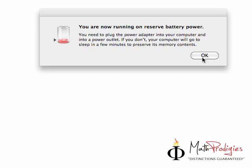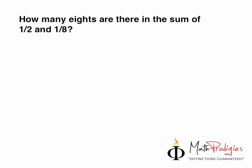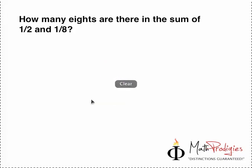Yesterday's question was, how many 8s are there in the sum of half and 1 over 8? That means 1 over 2 plus 1 over 8, how many 8s are there? And for those of you who are waiting for the answer, the answer is 5. Now, how do we do this question?